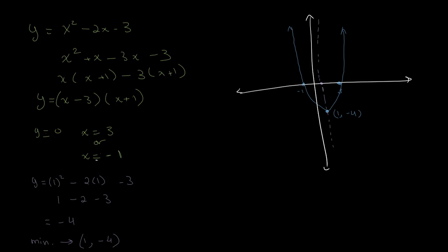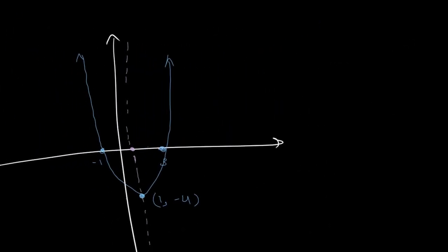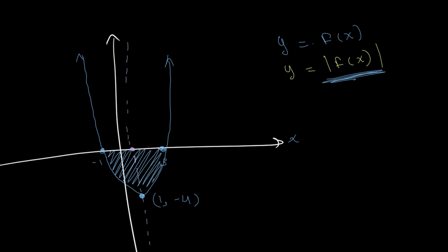Now once again, we have to account for the absolute value sign on our equation. So if in blue we have y is equal to f of x, we're looking to draw the graph of y is equal to the absolute value of f of x. And we know that since we're taking the absolute value of the function of x, it can never be negative. And whatever is below the x-axis is negative. So this part of our graph over here should not exist.